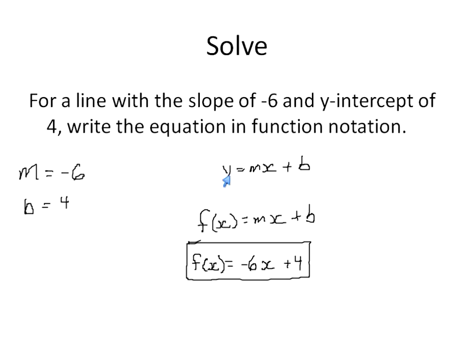So there is the equation of the line in function notation. Instead of saying y is equal to negative 6x plus 4, we'd say the f(x) is equal to negative 6x plus 4. That's it. So if you're given a graph and you can find this information, you're basically changing y for f(x). That's all you're really doing.